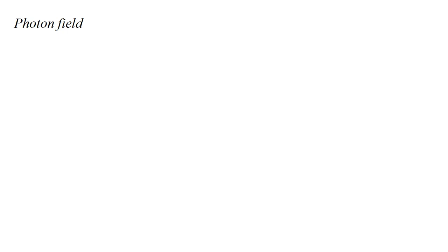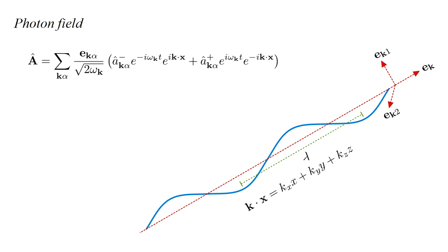First, let's review our theory so far, starting with the photon field, which was the focus of video 3 of this series. We showed that in quantum field theory, the classical electromagnetic field, described by vector potential A, becomes an operator A-hat. We express this as a summation over all possible modes, indexed by propagation vector k and polarization direction alpha, of E_k_alpha over square root 2 omega_k times A-hat k alpha minus, times e to the minus i omega_k t, times e to the i k dot x, plus a conjugate term with plus and minus signs swapped. E_k is a unit vector in the direction of photon propagation. E_k_1 and E_k_2 are two polarization directions, orthogonal to each other and to E_k.